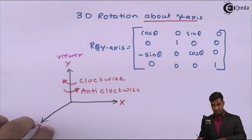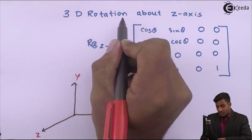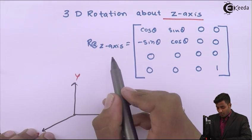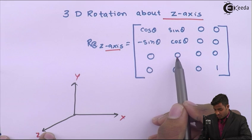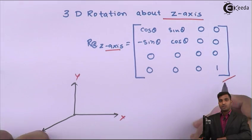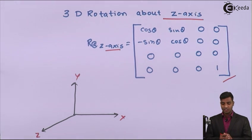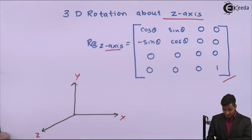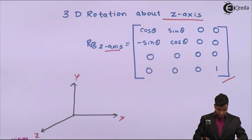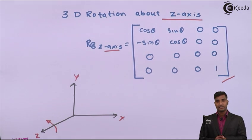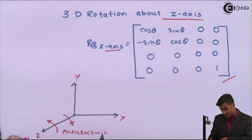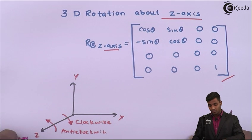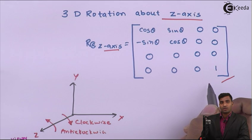The last is rotation about the Z axis. The standard matrix for rotation about the Z axis is: [cos θ, sin θ, 0, 0 / -sin θ, cos θ, 0, 0 / 0, 0, 1, 0 / 0, 0, 0, 1]. Since it is the Z axis, the viewer is positioned along the Z axis. Rotation in one direction is anticlockwise and the other is clockwise. This is the sign convention and the matrix for rotation about the Z axis.